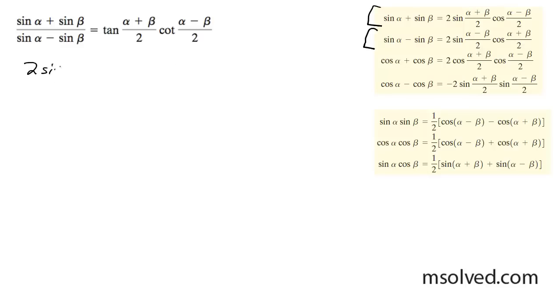It simply converts into 2 sine (α+β)/2 times the cosine (α-β)/2.